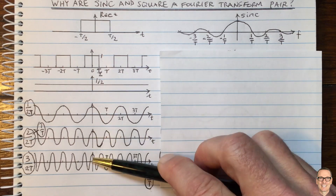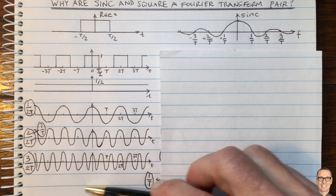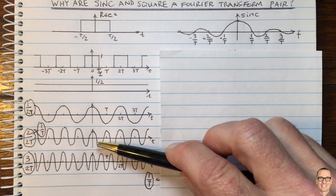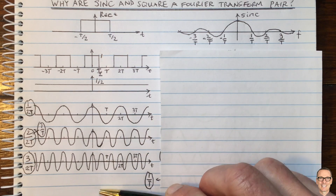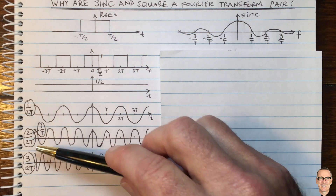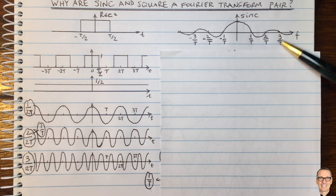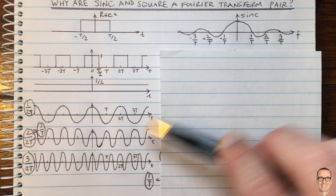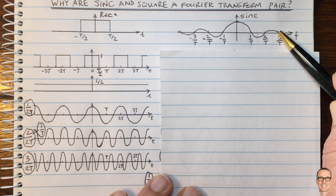If you go to higher frequencies — 4/(2T), 6/(2T) — you'll see the same thing: zero gradient at that transition point. Therefore there will be no component of 2/T, and likewise no component of 3/T. So that's giving you the intuition you need for these zero crossing points of the sinc function.